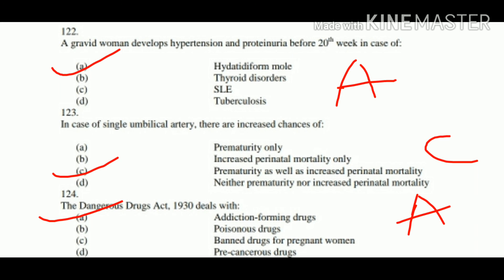Question number 123: In case of single umbilical artery there are increased chances of: A. Prematurity only, B. Increased perinatal mortality only, C. Prematurity as well as increased perinatal mortality, D. Neither prematurity nor increased perinatal mortality.